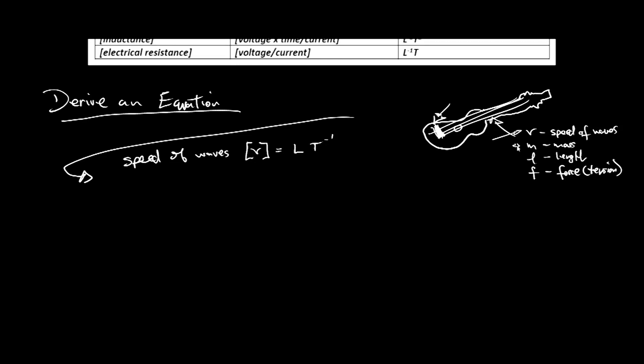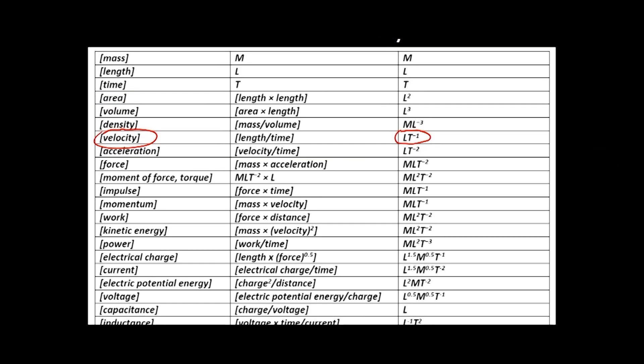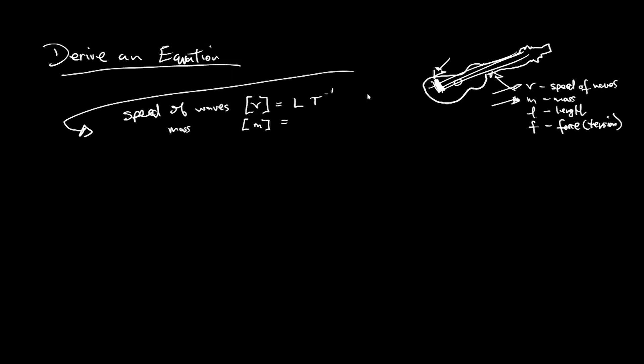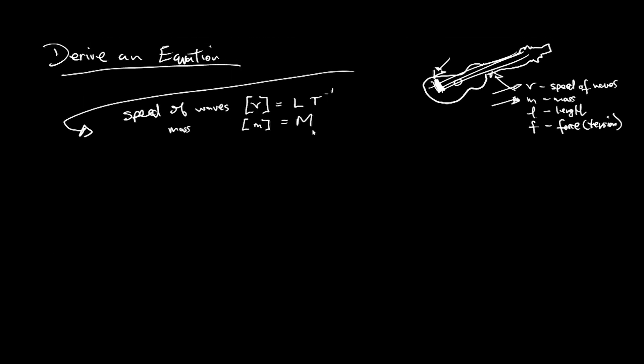Go up here, we can see velocity is LT to the minus one. So let's have LT to the minus one there. We also indicated, so yeah, we've done that one. Now we're looking for mass here. Mass, well we can give that a simple M and we're looking for the dimensions of M. That's nice and easy because it's at the top of our reference table. Mass is up here and it's, well, mass is just M. Nice simple one. So bring mass down and it's capital M.